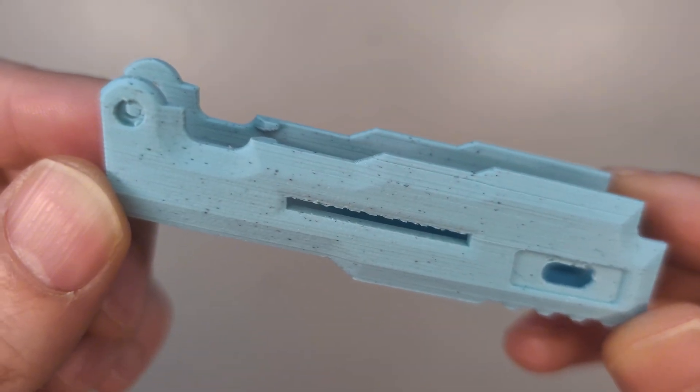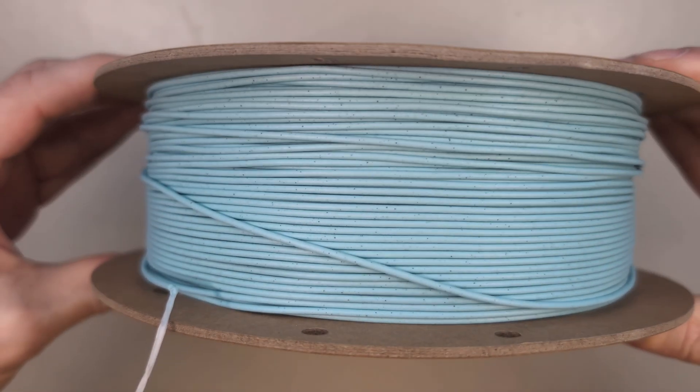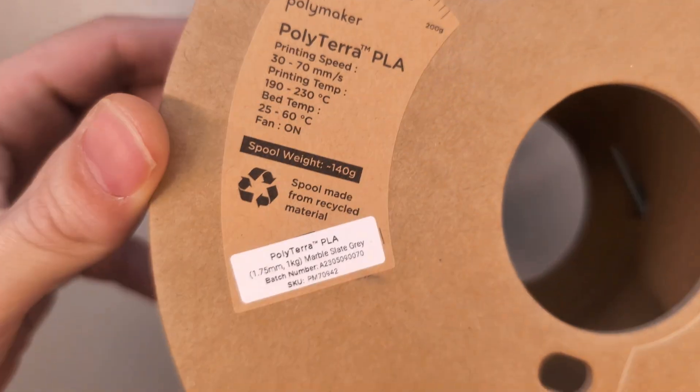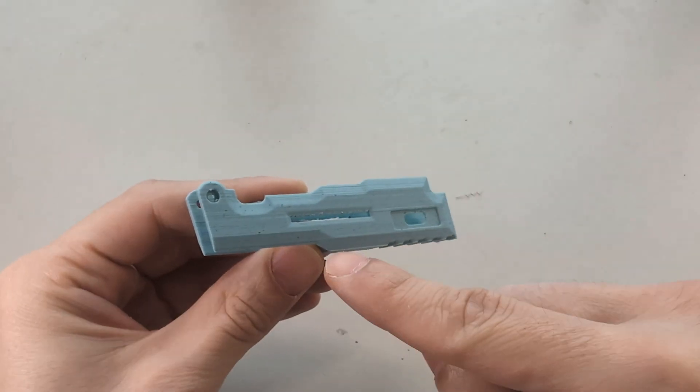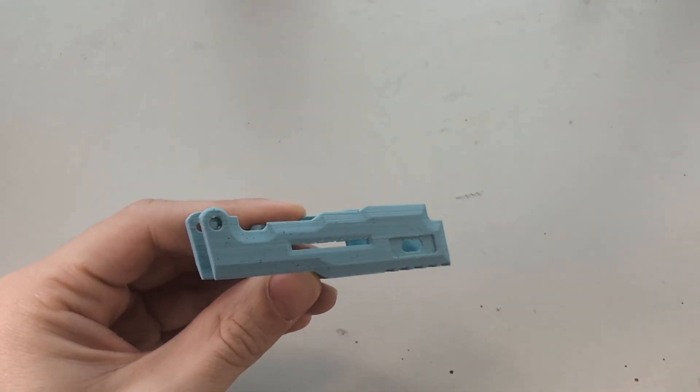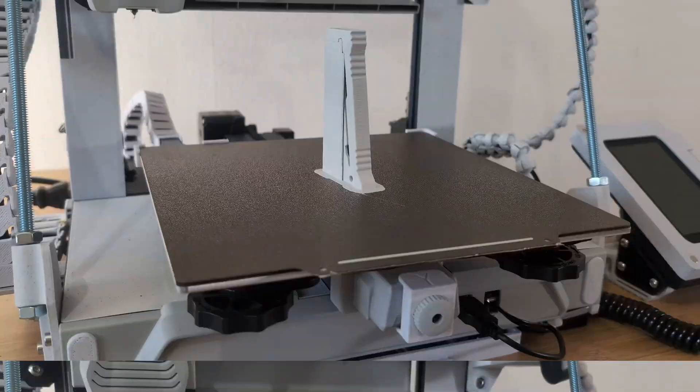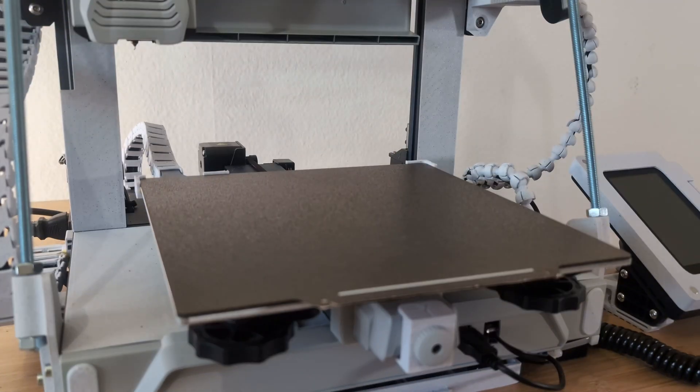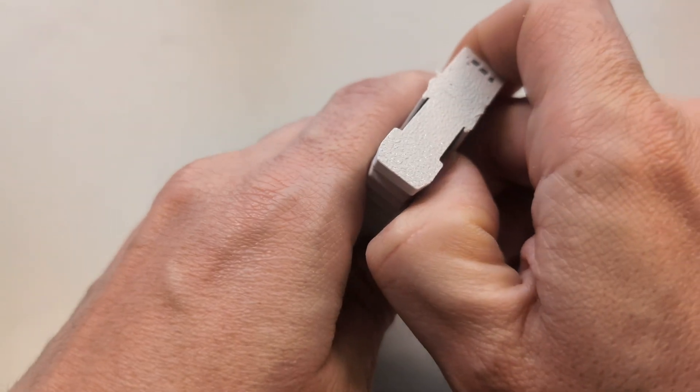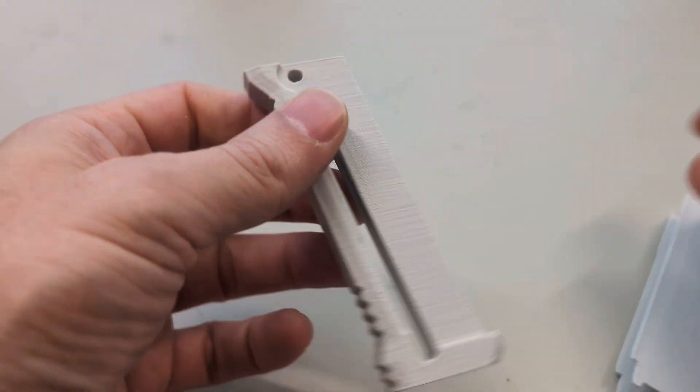I go for the threaded insert on the outer handle and I printed it in this marble slate grey PLA by Polyterra. I printed it laying flat using some supports here which came off easy, but left some little bumps that I remove with the file. Next up is the inner handle. This one I printed standing up with some supports using a filament called Nice Bio by 3D Jake.